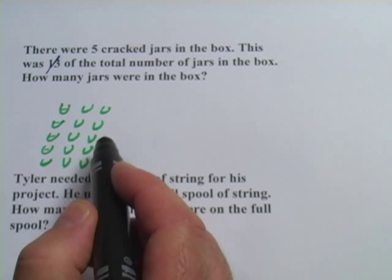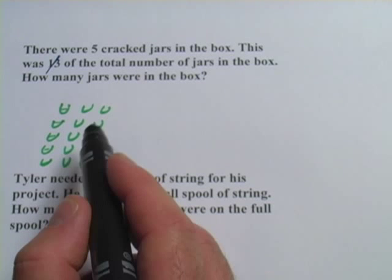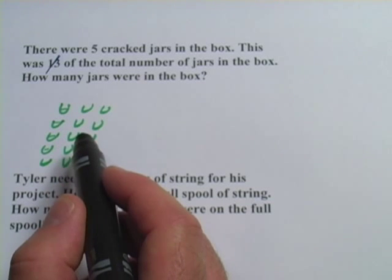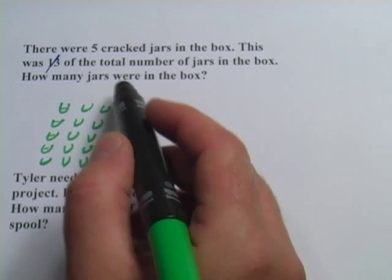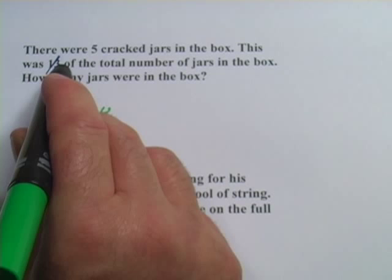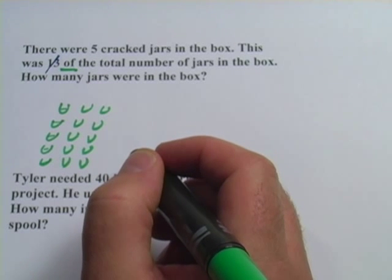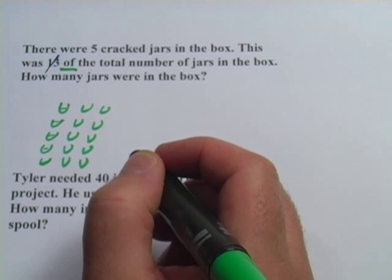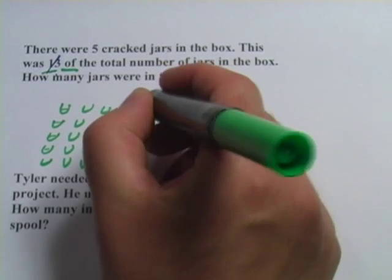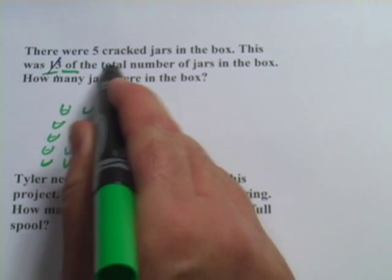So you could get the answer to this just by visualizing it, drawing a picture like that. I want to show you a method of using algebra to figure this out. So there were five cracked jars in the box. This is one-third of the total number. I've mentioned before that 'of' in math problems is almost always multiplication. And we have a one-third here, so it's one-third of, or multiplied by, the total number of jars.